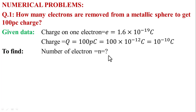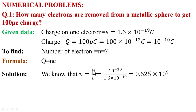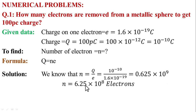We need to find the number of electrons N. Write the formula: Q is equal to N multiplied by e — number of electrons multiplied by charge on one electron. Rearranging, N equals Q divided by e. So N equals 10 raised to power minus 10 divided by 1.6 multiplied by 10 raised to power minus 19. Solving, N equals 6.25 multiplied by 10 raised to power 8 electrons.